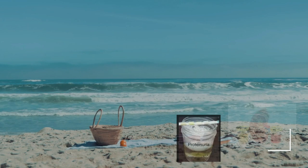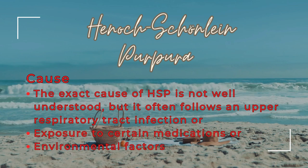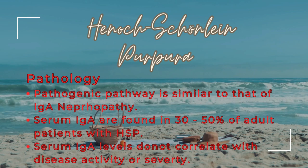The exact cause of HSP is not well understood, but it often follows an upper respiratory tract infection, or exposure to certain medications or environmental factors. The pathogenic pathway is similar to that of IgA nephropathy. Serum IgA levels are found in 30 to 50% of adult patients with HSP, but these IgA levels do not correlate with disease activity or severity.